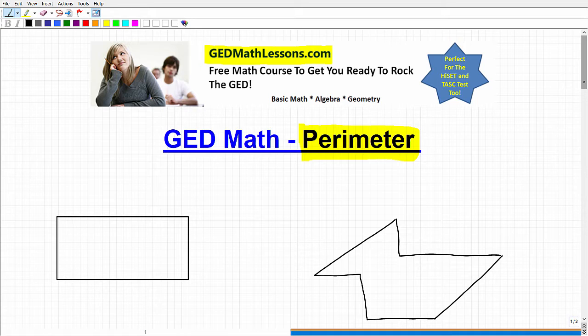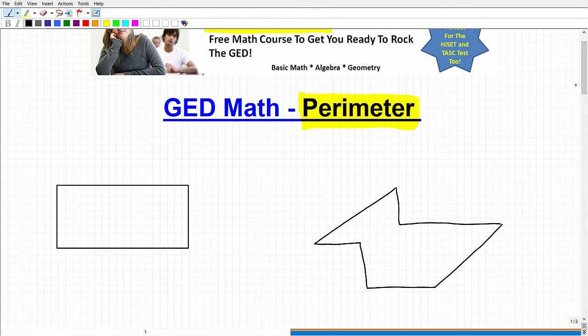Okay, so perimeter is effectively just the distance around something. So let's suppose I have this square. Let's say this is a soccer field or a football field, or I wanted to measure all around the entire length of the field. So if this is, in fact, a rectangle, let's say this is a hundred, let's say this is 30.